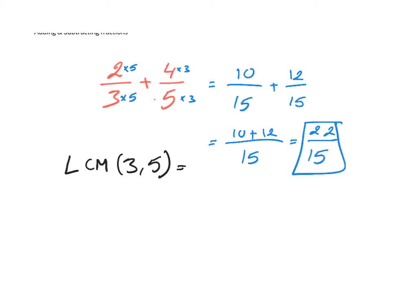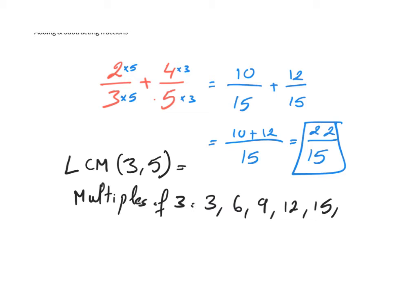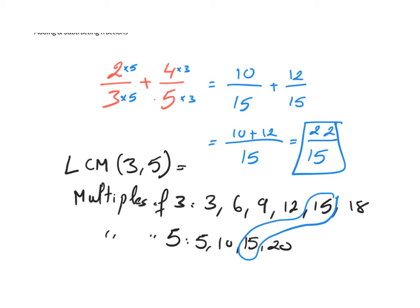For the least common multiple, let's find the multiples of each number. Multiples of three: three, six, nine, 12, 15, 18, and so on. And the multiples of five: five, 10, 15, 20, and so on. So we can see the least common multiple between the two numbers is going to be 15.